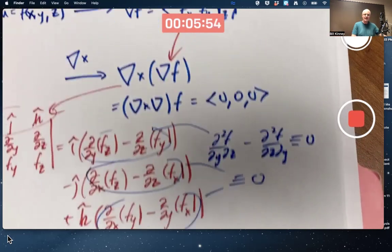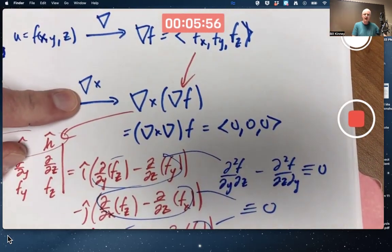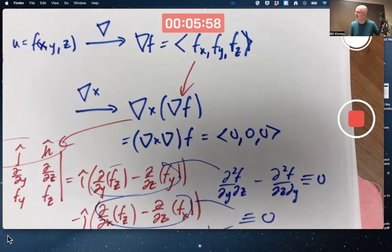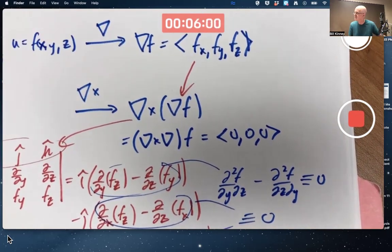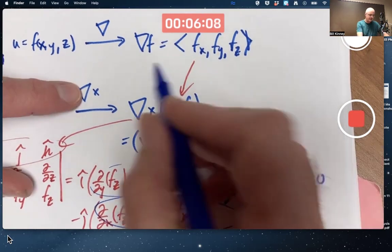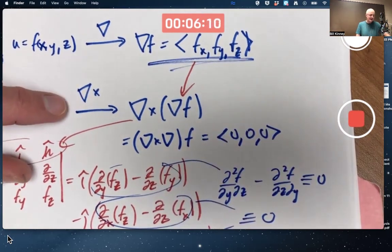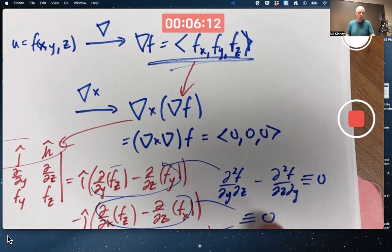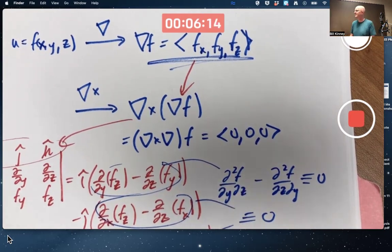Again, the point being, if you take the curl of a gradient vector, you will always get zero. That's worth knowing for your future. When a vector field, and this is a vector field, has a curl equal to the zero vector always, it's called irrotational. It doesn't cause any rotation.